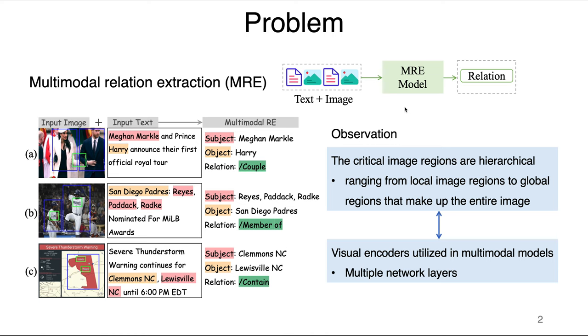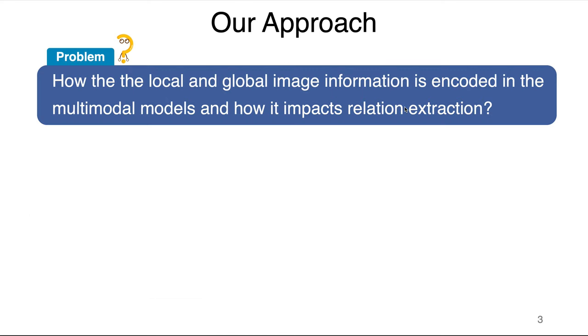Meanwhile, the visual encoders utilized in current multimodal models are often multilayered. To this end, we are concerned about the problem: how is the local and global information encoded in the multimodal model, and how does it impact relation extraction?